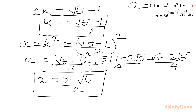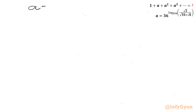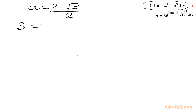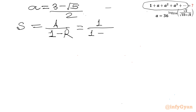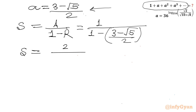Now we evaluate the sum S. With a = (3 − √5)/2 as the common ratio, this is an infinite GP. Using the formula S = A/(1 − r) with first term A = 1 and r = (3 − √5)/2: S = 1 / (1 − (3 − √5)/2). Taking the LCM gives S = 2 / (2 − 3 + √5) = 2 / (√5 − 1).